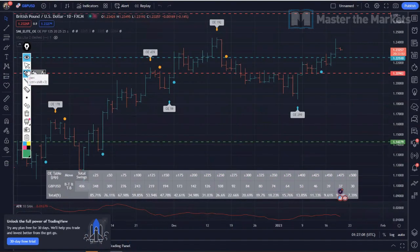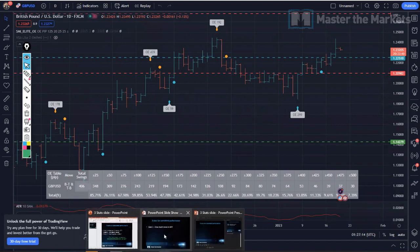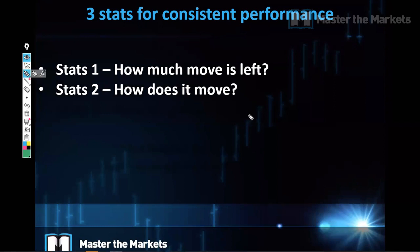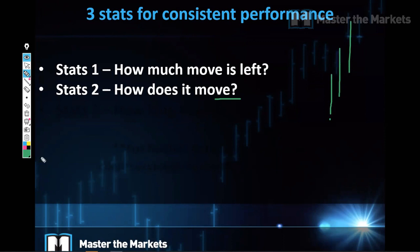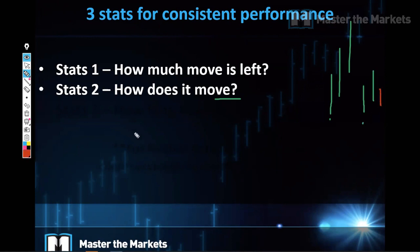The second stat that you must have is not only knowing how much move is left, but how does it move to get to your target — your open equity point. From the point of confirmation, does it move straight, or does it move up a little bit, then come back down, and then move further up?